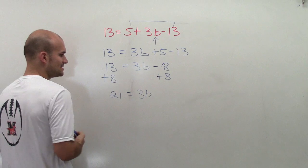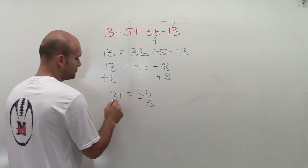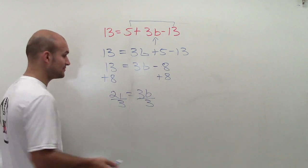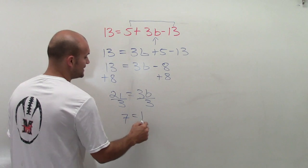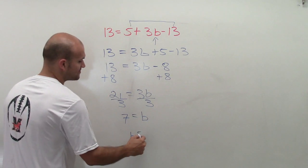Then, I'll undo multiplication of 3 by dividing by 3 on both sides. I'm going to get 7 equals b. I'll rewrite this as b equals 7.